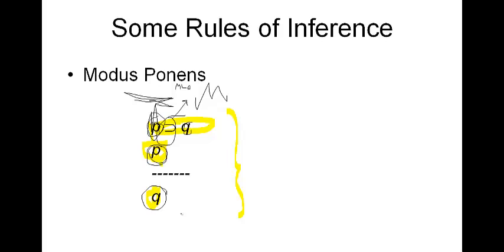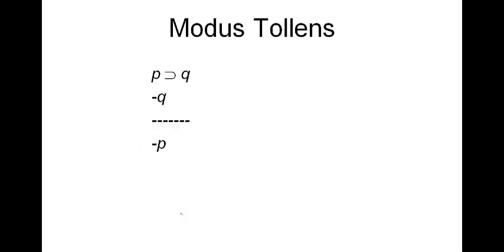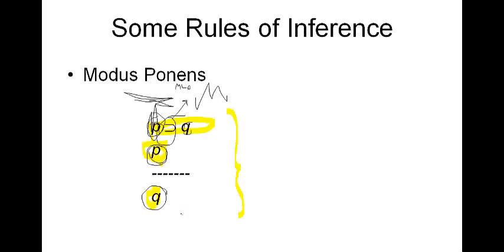The main point is to recognize that when we're talking about rules of inference, we're looking at the main logical operators of the sentences in question. That was modus ponens — straightforward enough, your old friend.